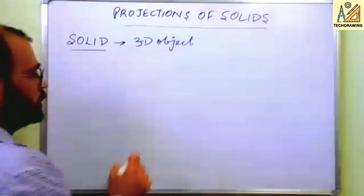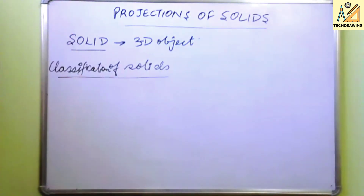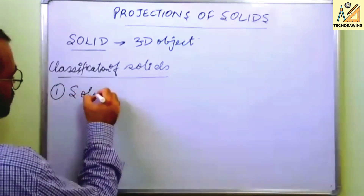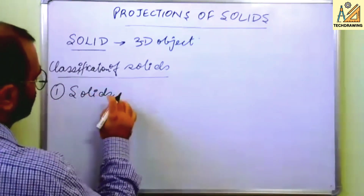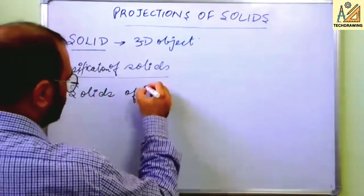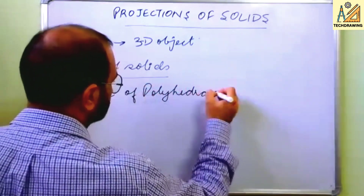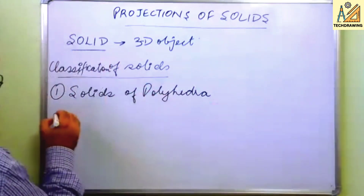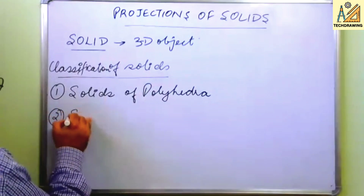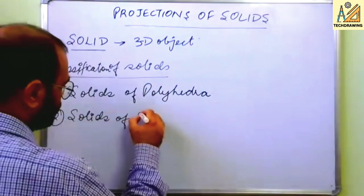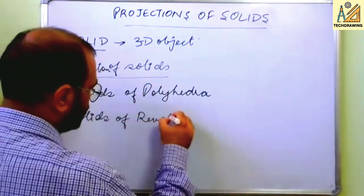The classification of solids has two main categories: first is solids of polyhedra, and second is solids of revolution.